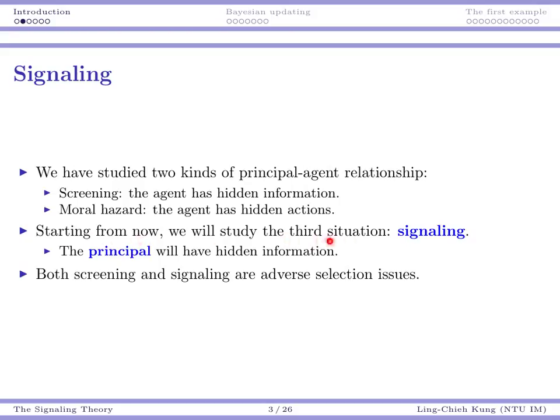Starting from now we will study another kind of problem. In the signaling problem it is the principal that has private information. The principal is going to know something that the agent does not know. In the following weeks when we talk about signaling games, the principal knows some private information but the agent does not. We're going to see what happens when we have this kind of informational structure.